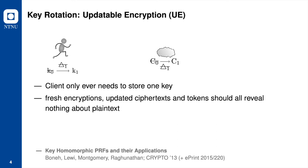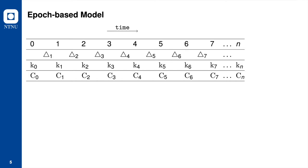An honest cloud server will delete all the old ciphertext and the update token after it has finished all the updates. It is reasonable to expect that fresh encryption, updated ciphertext, and tokens shouldn't reveal anything about the plaintext to an adversary.